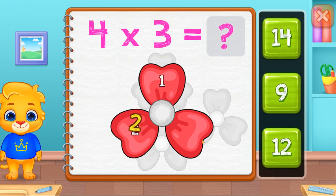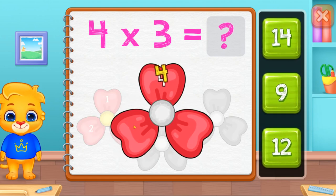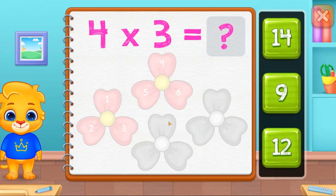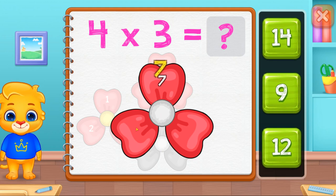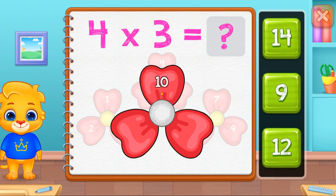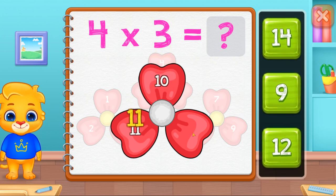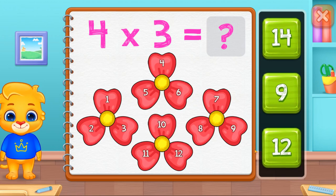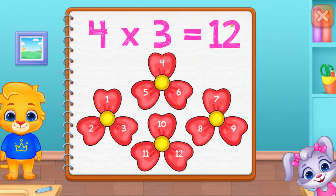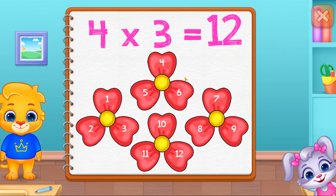One, two, three, four, five, six, seven, eight, nine, ten. Ten, eleven, twelve. Four times three equals twelve.